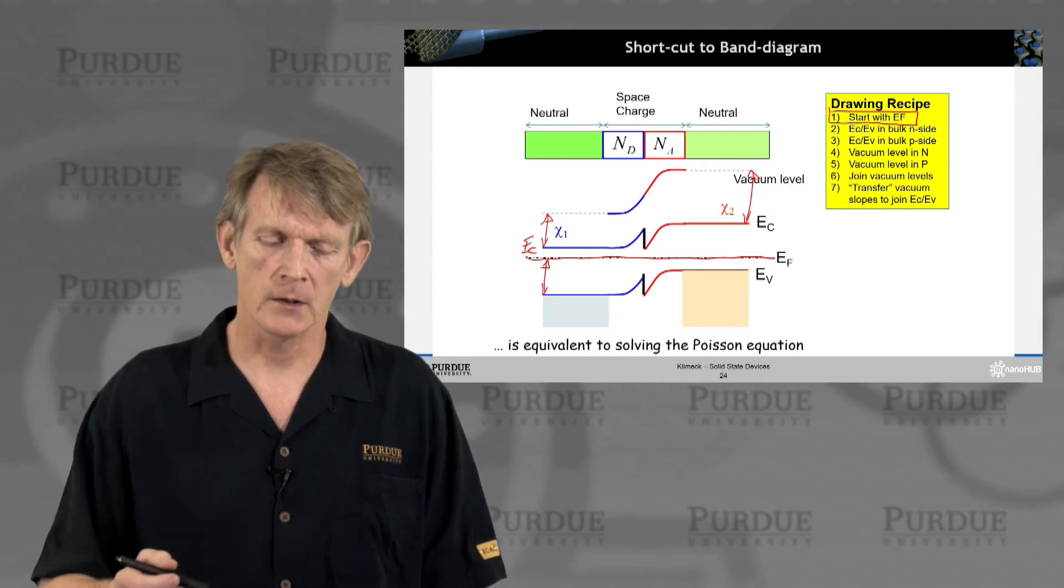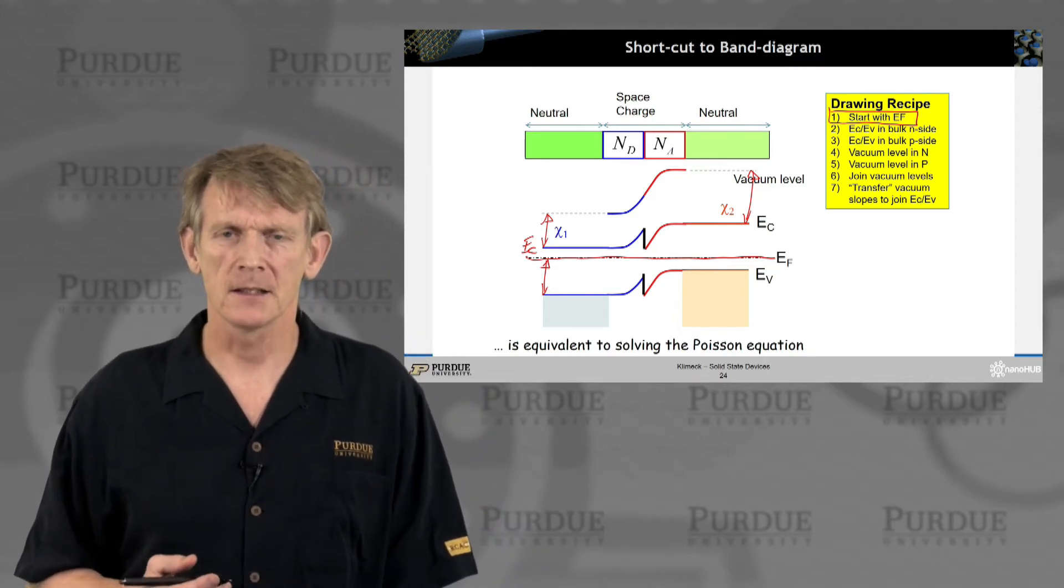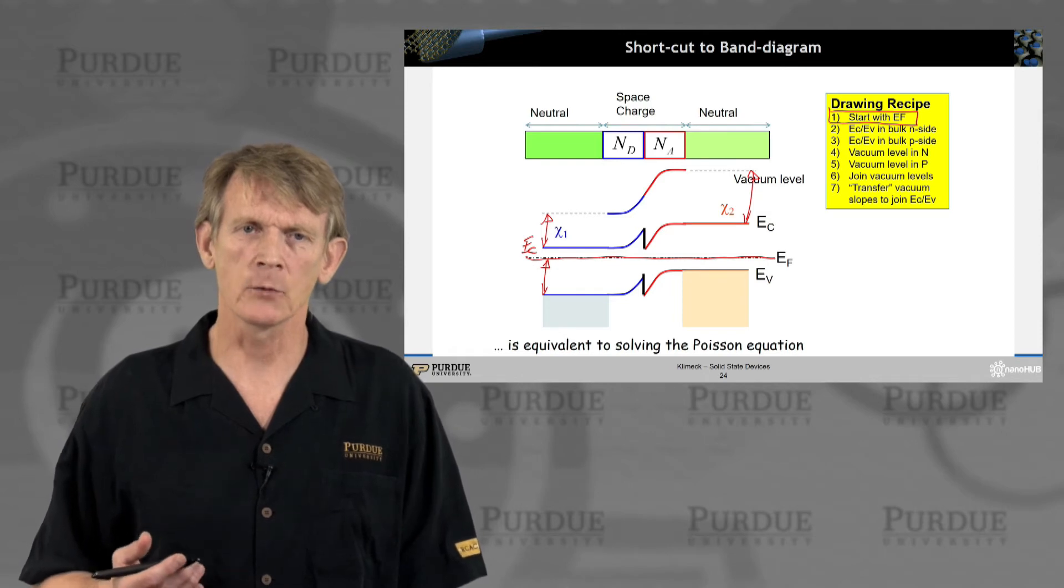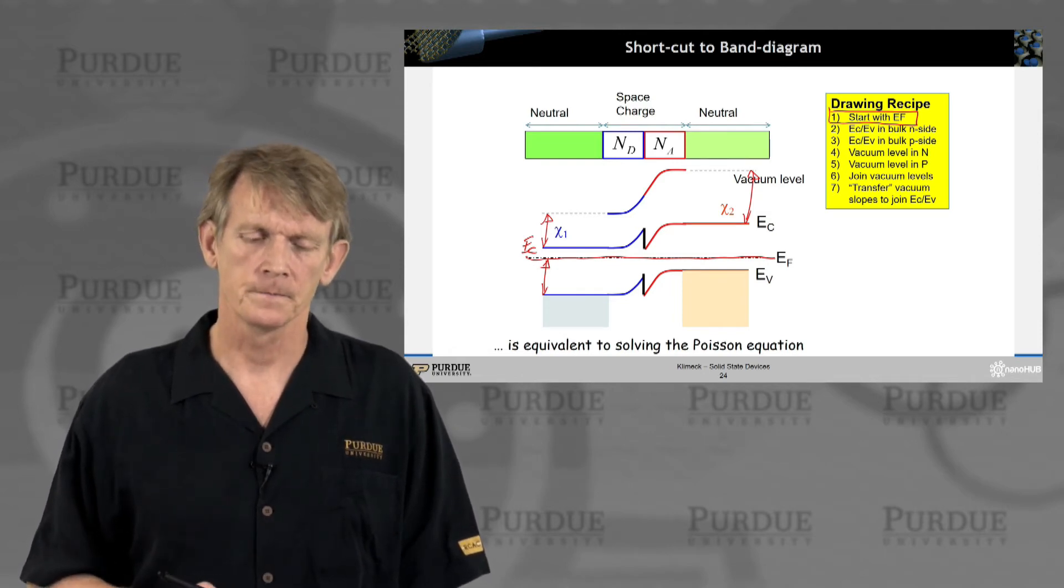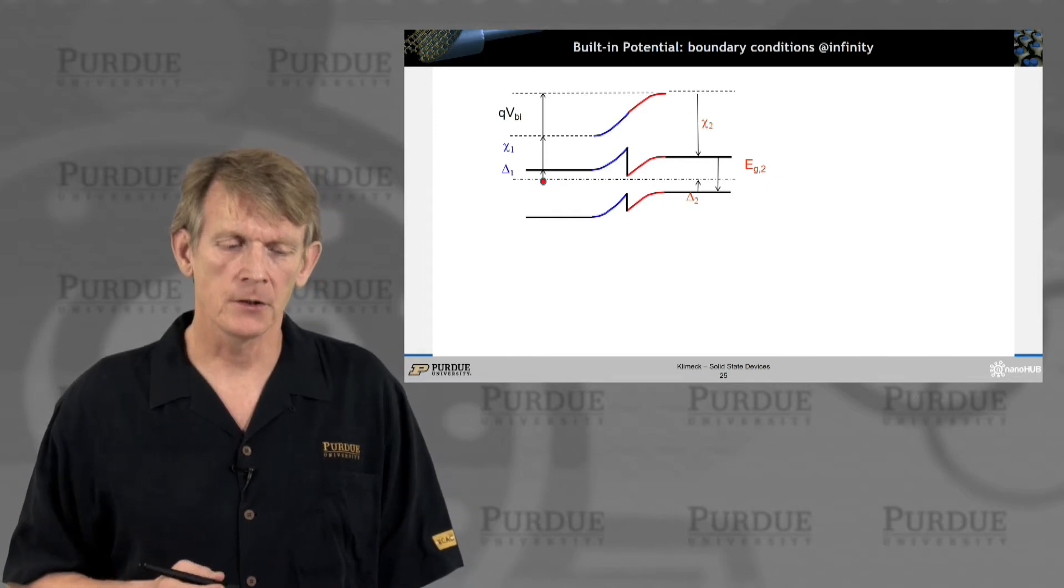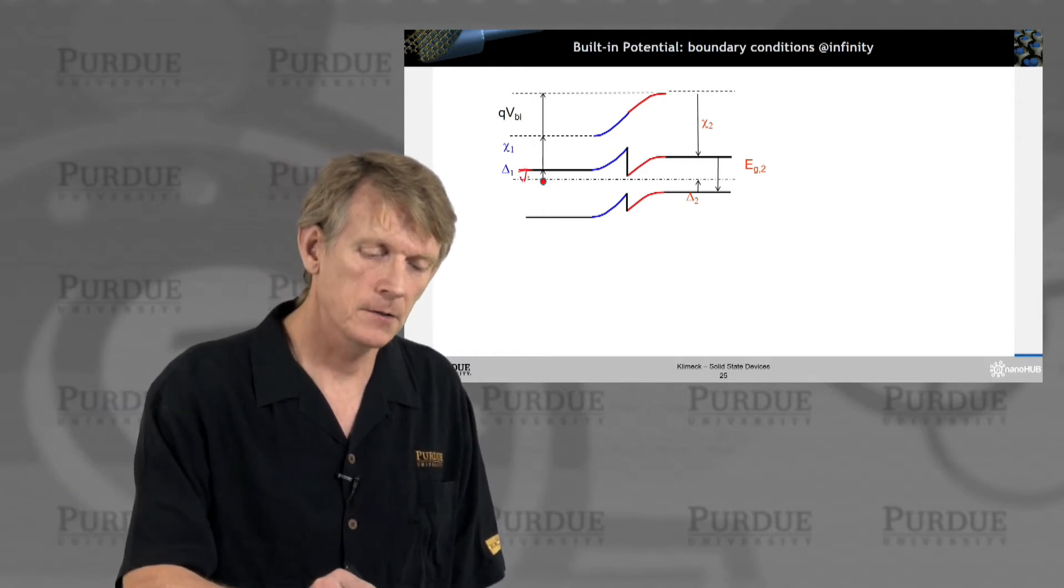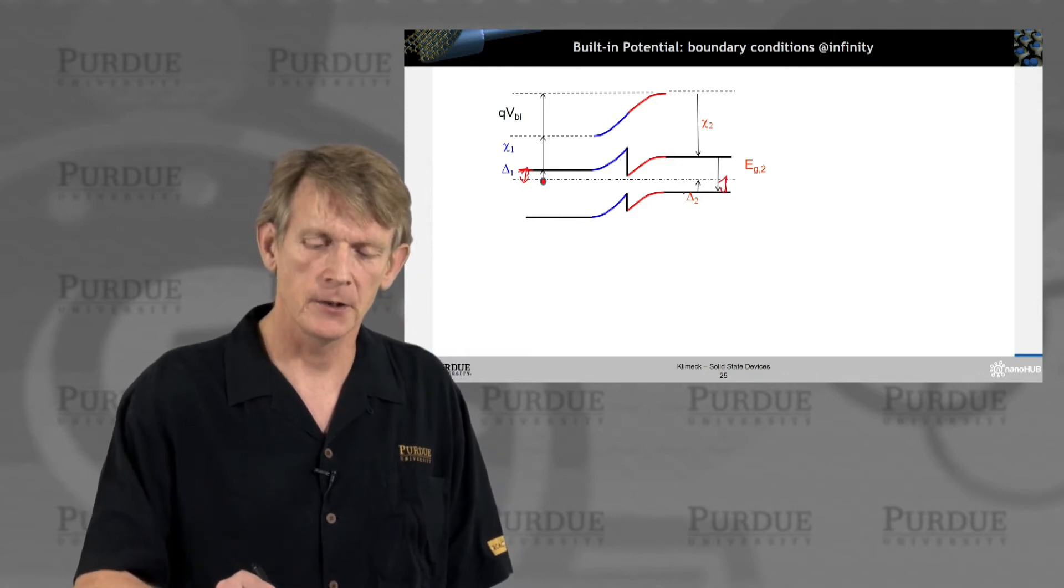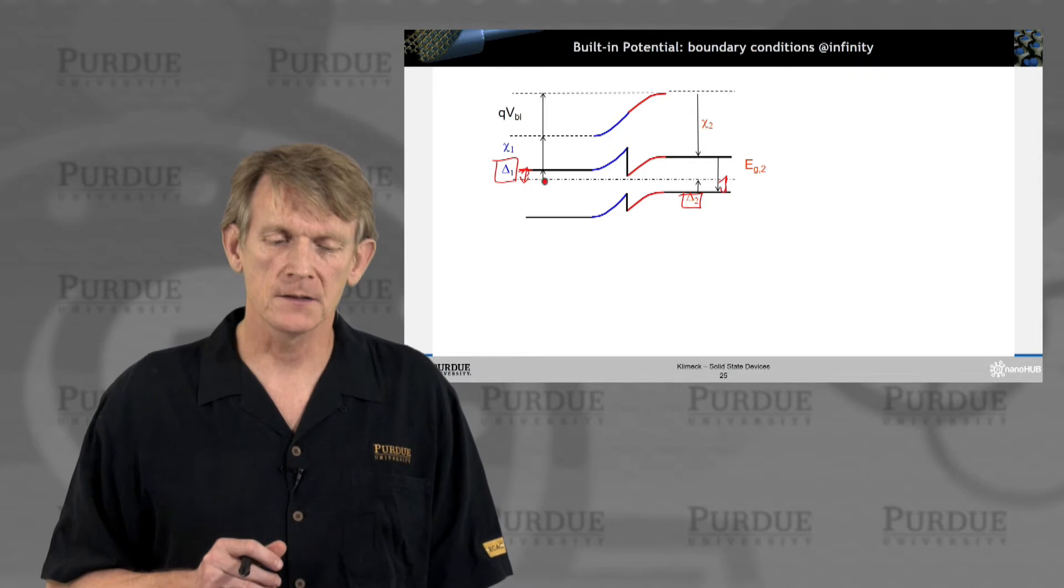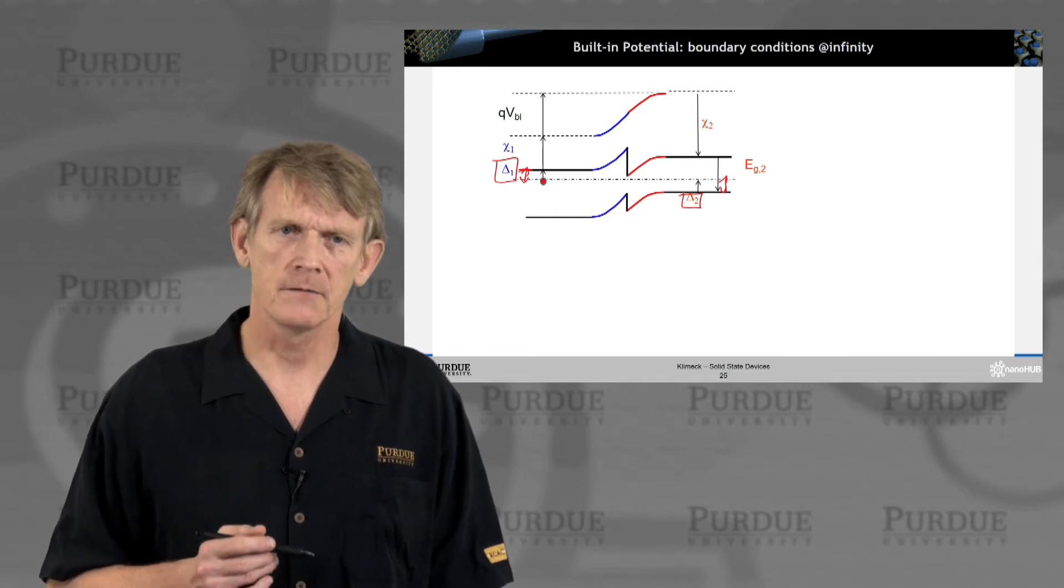Now you might end up with a diagram where you have this strange looking triangular shaped band edges. Well, that is coming from the fact when chi1 and chi2 are not the same. That means on the left and right of the P-N junction you might have material that is different from each other, where the excitation from a conduction band to the vacuum is different. And that will translate itself into the junction.